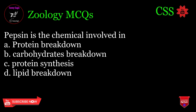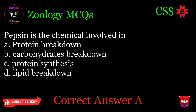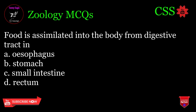Pepsin is the chemical involved in: A. Protein breakdown, B. Carbohydrates breakdown, C. Protein synthesis, D. Lipid breakdown. Correct answer: A.